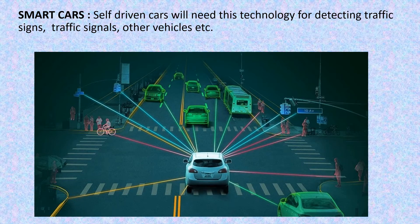Another application of computer vision is smart cars. Self-driven cars need this technology for detecting traffic signs, traffic signals, other vehicles, etc. Computer vision enables self-driving vehicles to capture visual data, and the cameras attached to such vehicles can record live footage and allow computer vision to create 3D maps. Using these maps, autonomous vehicles can understand their surroundings better. These vehicles use sensors to spot objects like other vehicles, traffic lights and human beings, and computer vision enables self-driving vehicles to identify obstacles and avoid collision or accident.